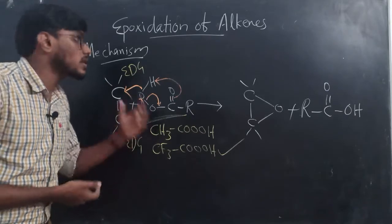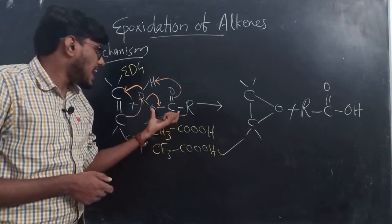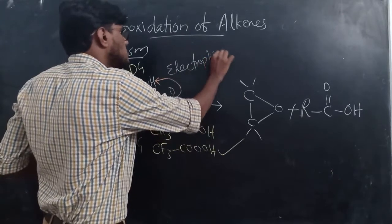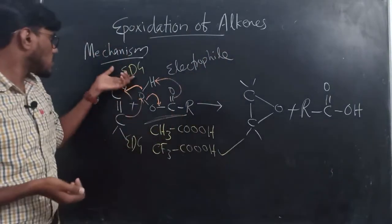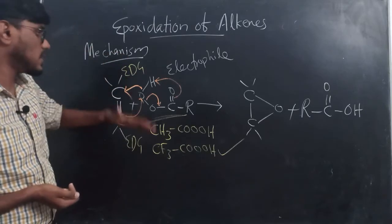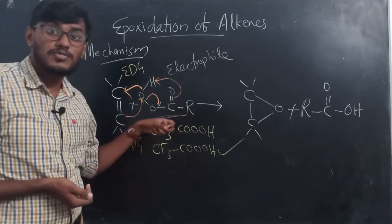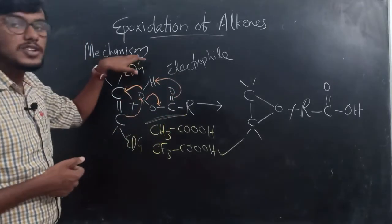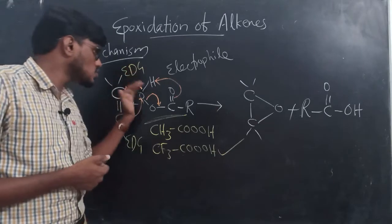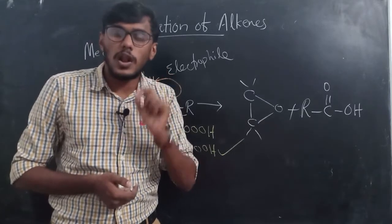So we can conclude: electron-donating groups on alkenes increase the rate of epoxidation, and electron-withdrawing groups in peroxy acids also increase the rate. This is because the peroxy acid acts as an electrophile — an electron-loving species. That is why electron-donating substituents on the alkene increase the reaction rate. Also, terminal alkenes react more slowly with peroxy acids than other alkenes.